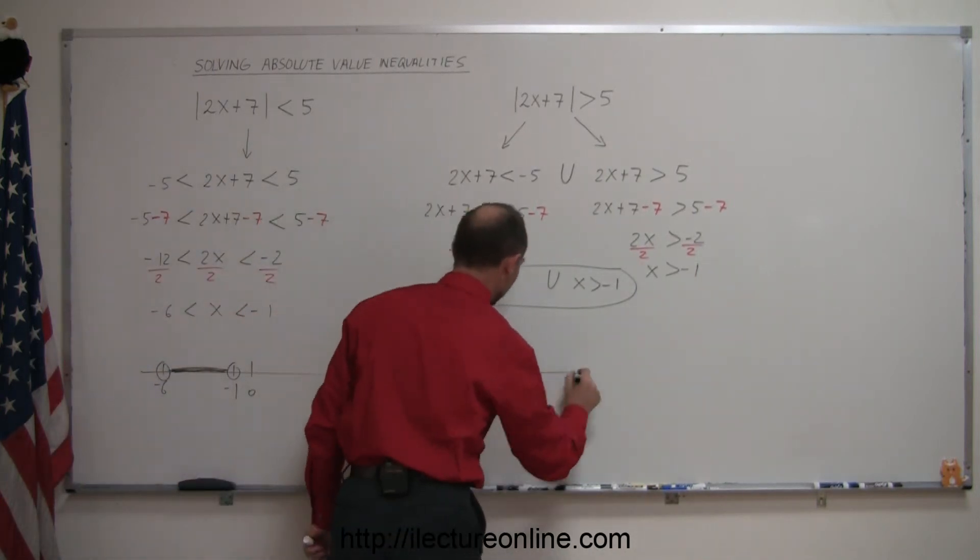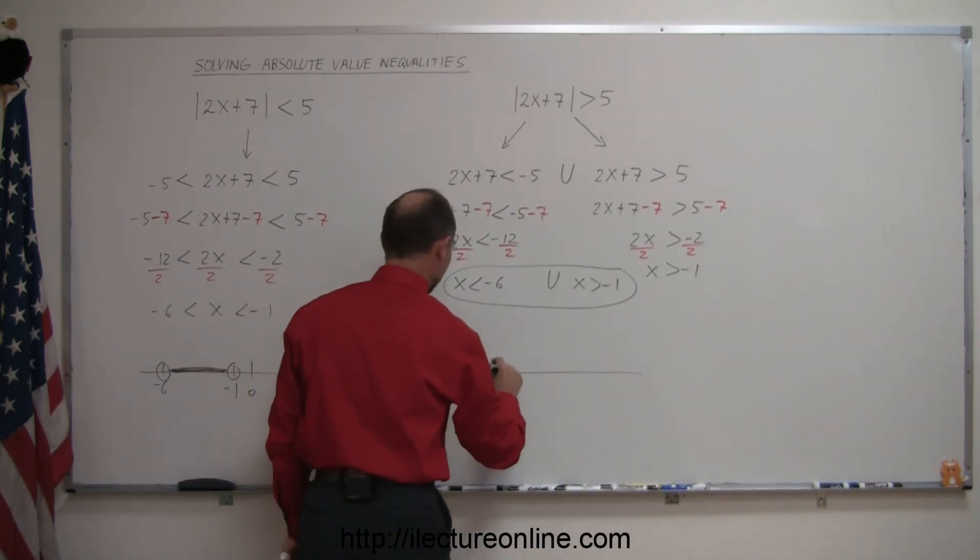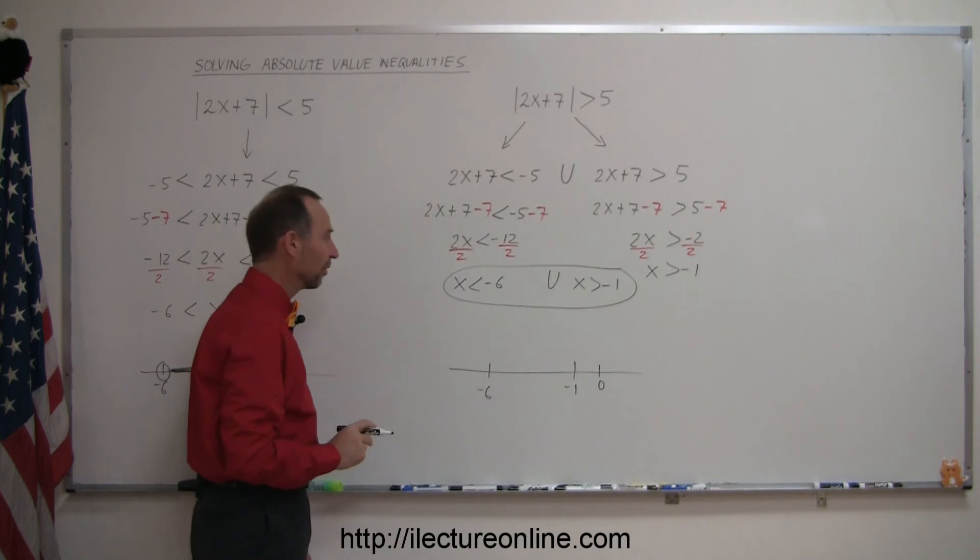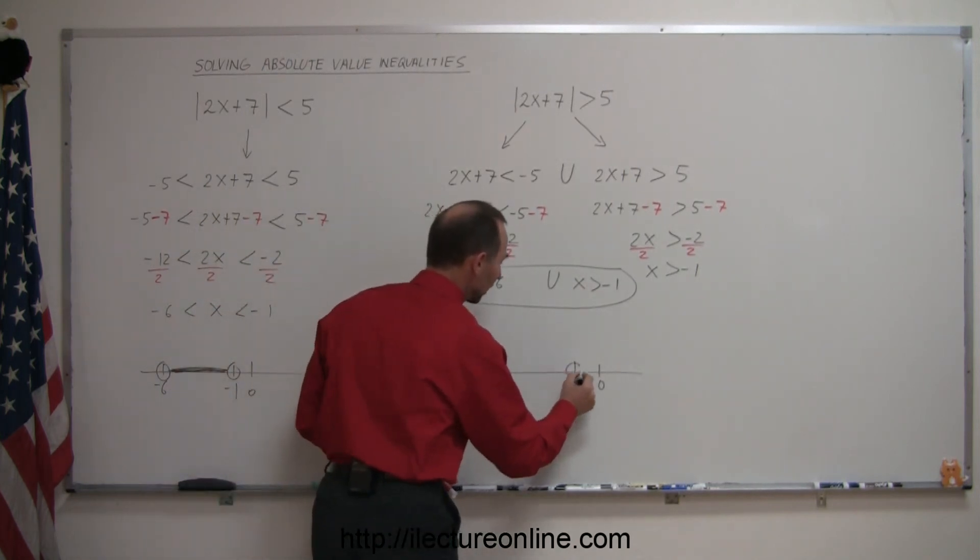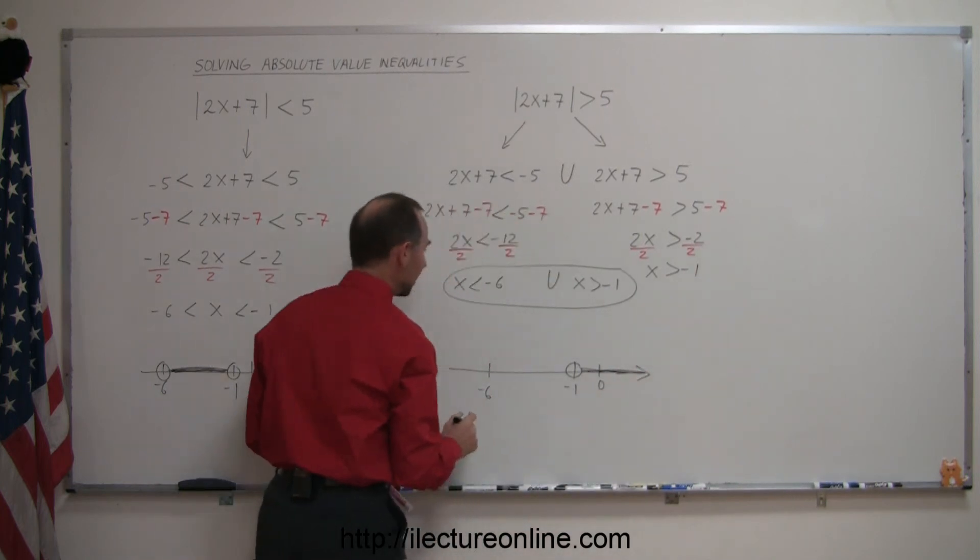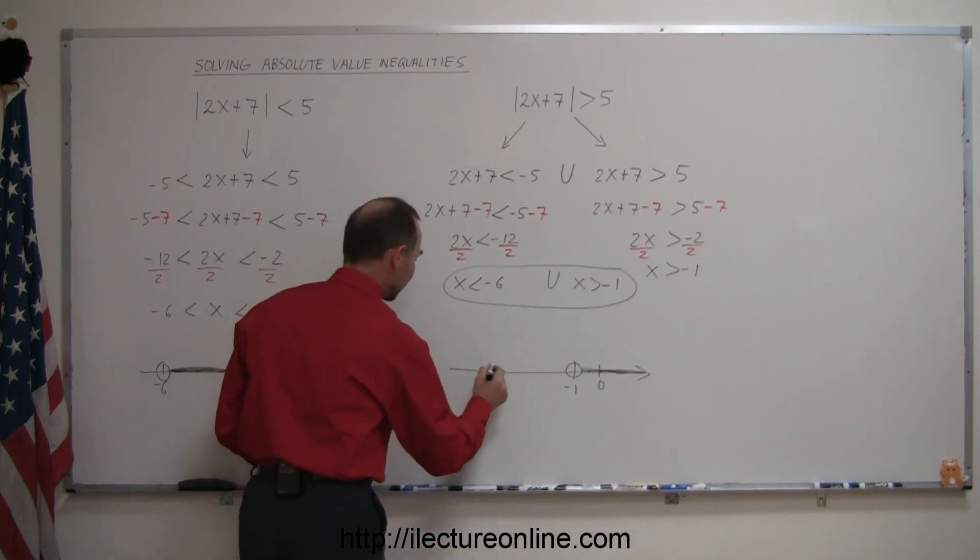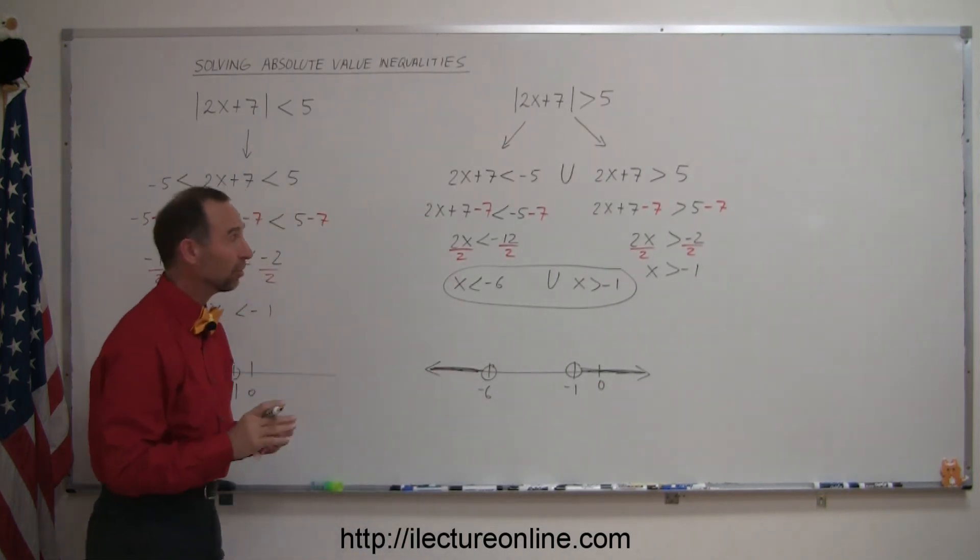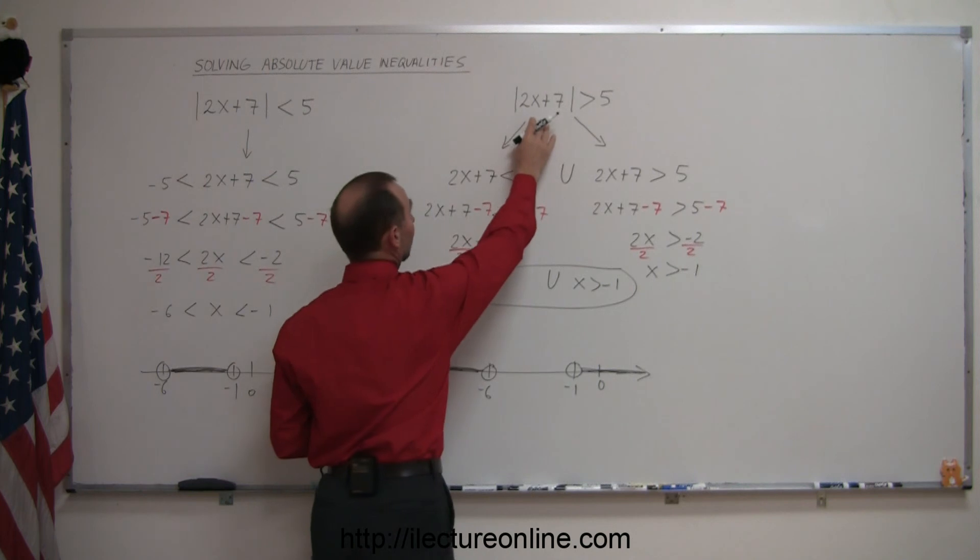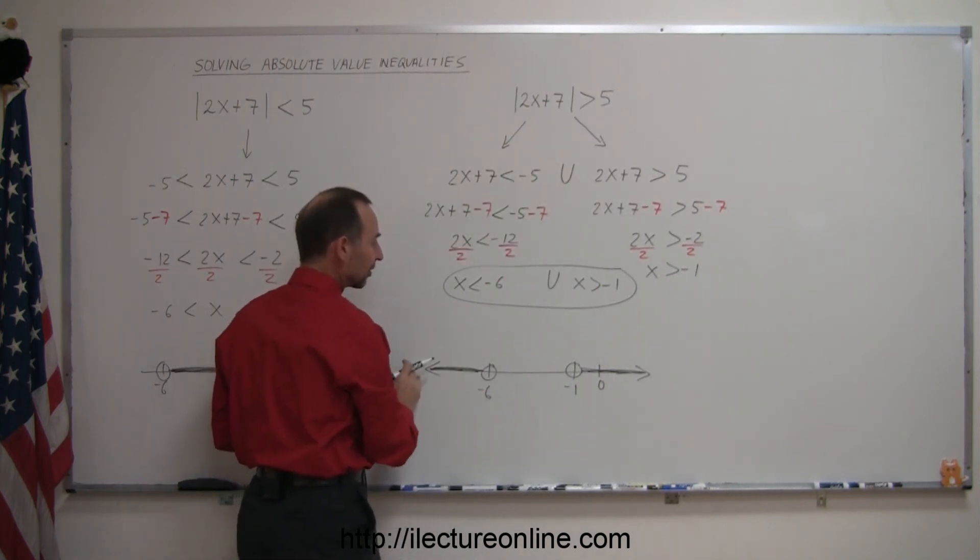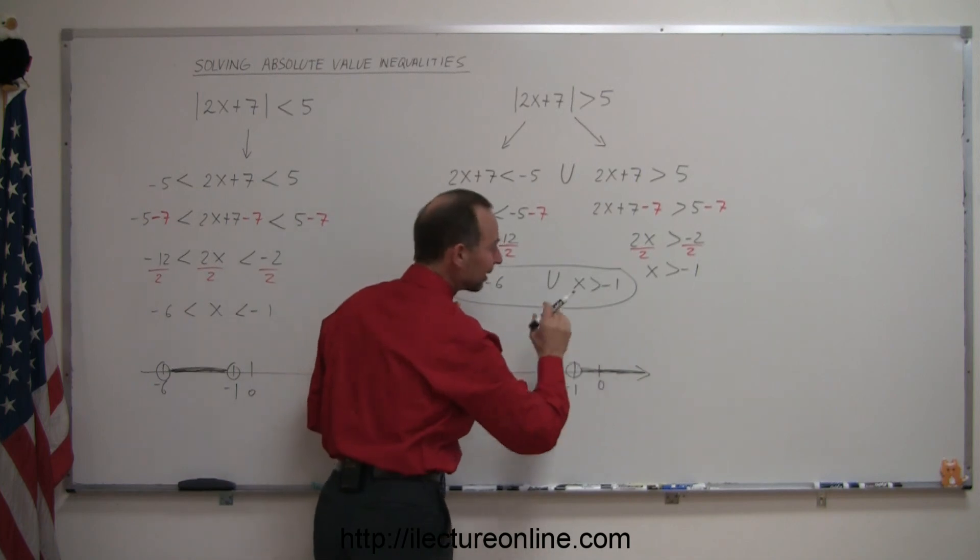So, we're looking for all values where x is less than negative 6. So, here's negative 6. Here's negative 1. And there's 0. To give you a reference, we want x to be greater than negative 1. So, not include negative 1 and everything to the right. And everything to the left of negative 6. So, that means all values that are permissible to solve this inequality is x can be less than negative 6 and x can be greater than negative 1.